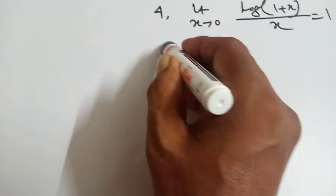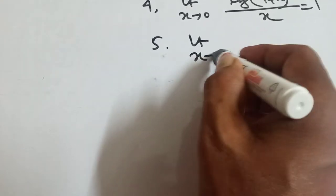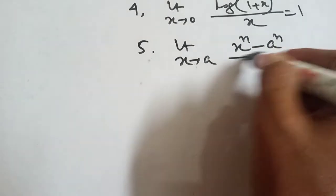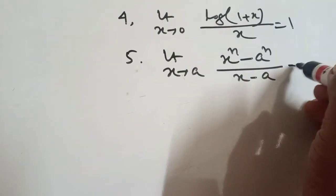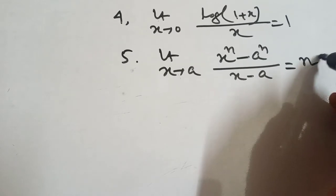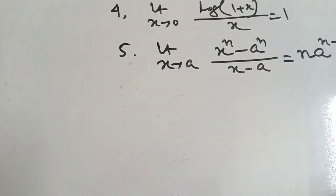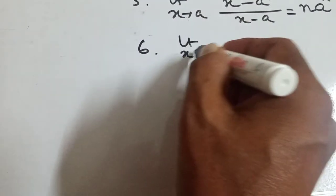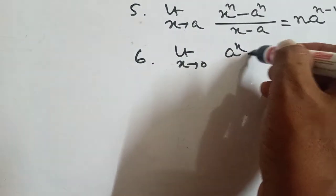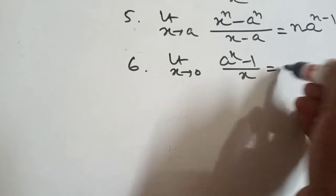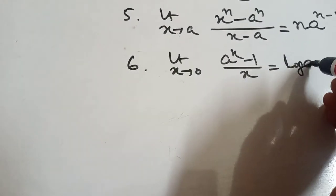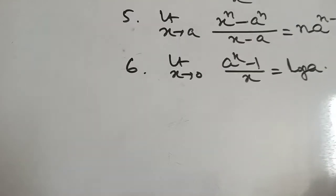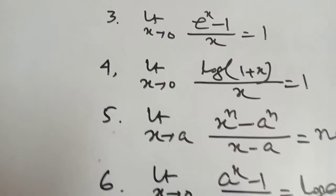Formula 5: limit x tends to a, x to the power n minus a to the power n, divided by x minus a, equal to n into a to the power n minus 1. Formula 6: limit x tends to 0, a to the power x minus 1 by x, equal to log a. These are the most important formulas for limit.